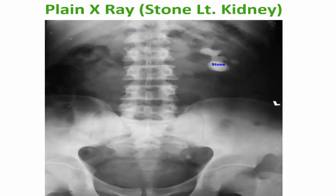And then, a plain X-ray of the abdomen. This is the site of the left kidney, showing a radiopaque shadow — this is a stone in the left kidney.